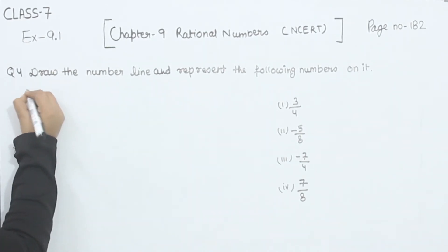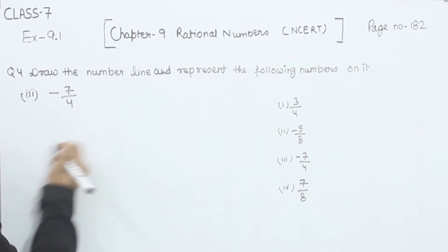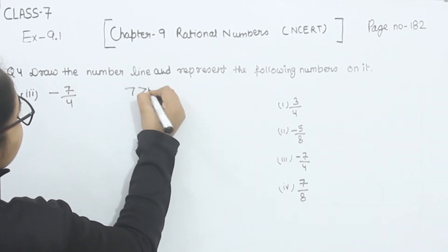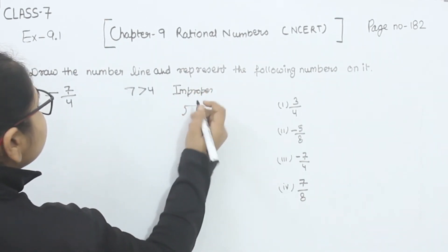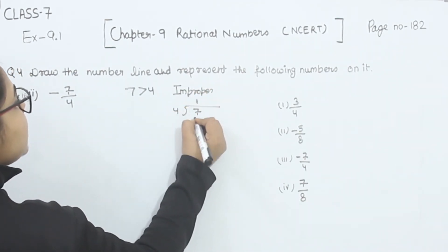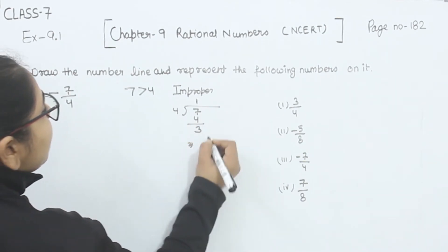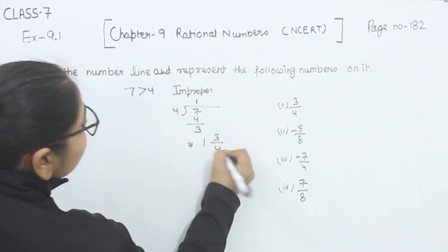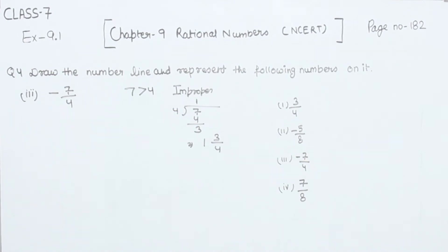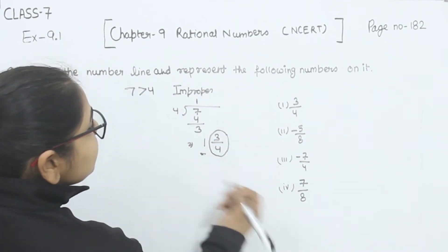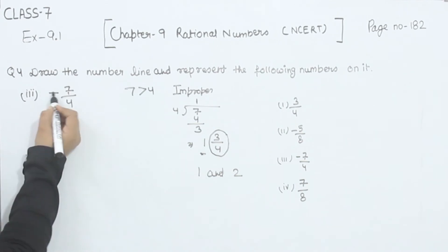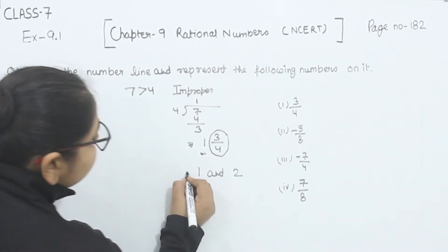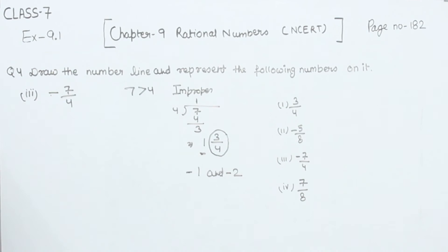In part 3, we have minus 7 by 4. The numerator is greater than the denominator, so this is an improper fraction. Dividing: 4 ones are 4, remainder 3, so I can write it as 1 and 3 by 4 in the mixed fraction. This means it lies between 1 and 2. Since the number has a negative sign, this number lies between minus 1 and minus 2.